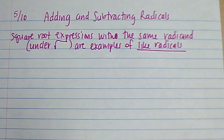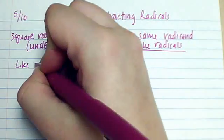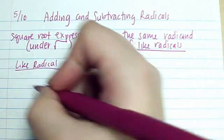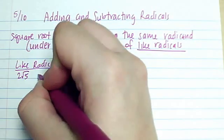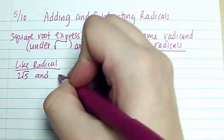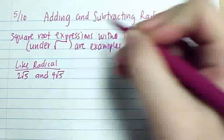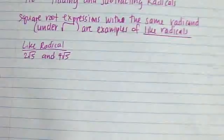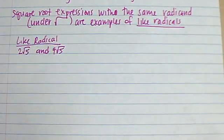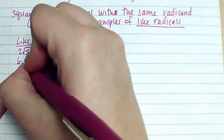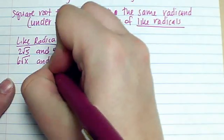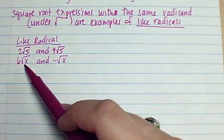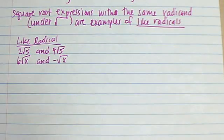Let's look at some examples of what makes something a like radical. That would be if I had 2 root 5 and 4 root 5 — the numbers underneath the square root sign are the same. Another one would be if I had 6 root x and negative root x. Again, the variable underneath is the same.